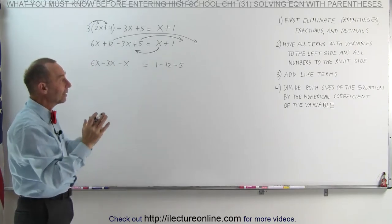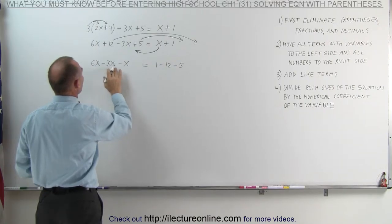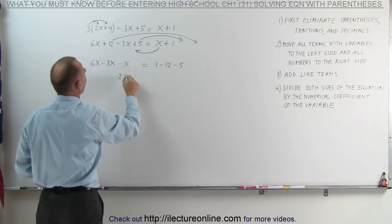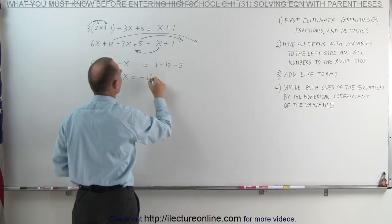Now we can combine like terms. That's step number 3. We're going to add these terms together. 6 minus 3 minus 1, which gives me 2x, is equal to 1 minus 12 is minus 11, minus 5 is a minus 16.